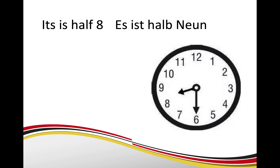It is half eight — es ist halb neun. So basically in English that means it is half an hour to nine o'clock. So half six would mean it is half an hour to seven — es ist halb sieben.